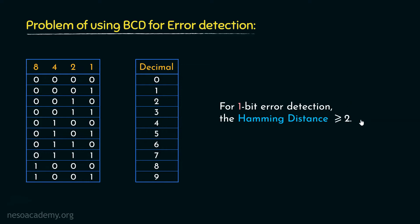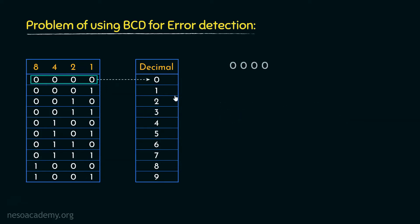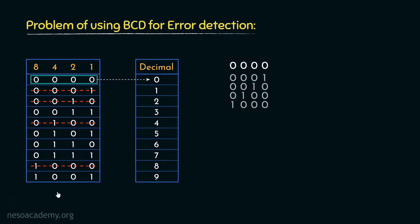If we assign a particular pattern to a specific symbol, since we are trying to incorporate 1-bit error detection, all the unit distance patterns from this should be considered as invalid. So, if we assign 0000 to the symbol 0, all the patterns which are unit distant from 0000 will be treated as invalid. The unit distance patterns are 0001, 0010, 0100, and 1000 — these will be omitted from our list.